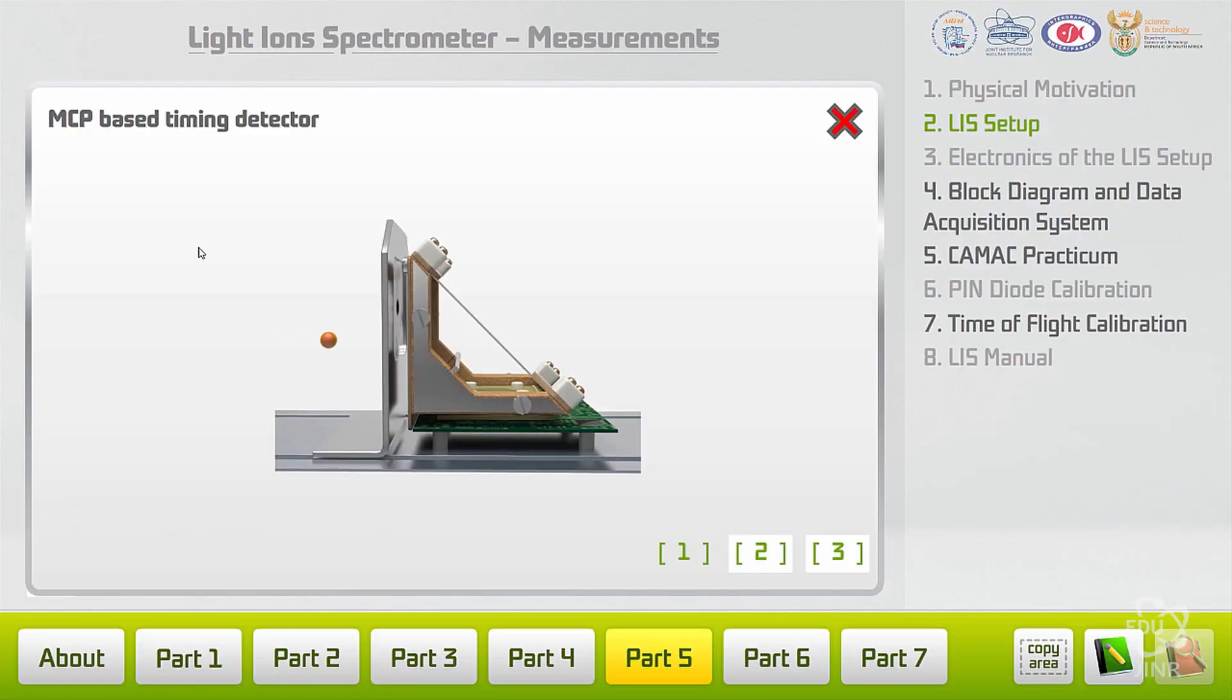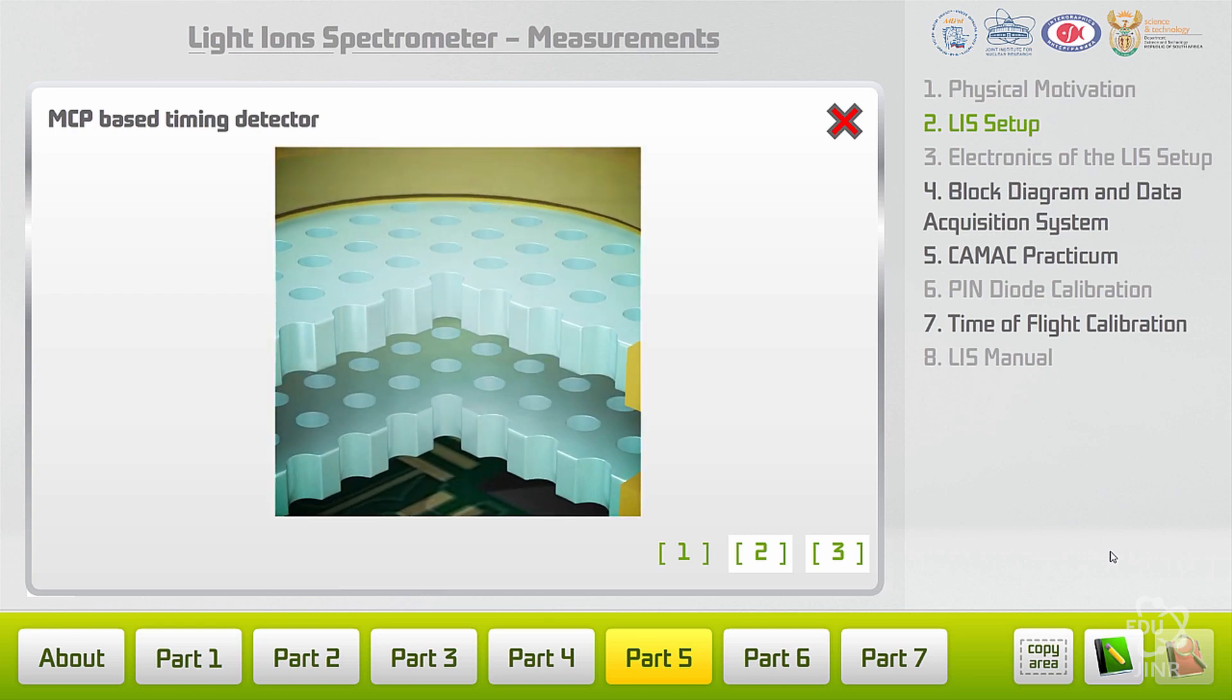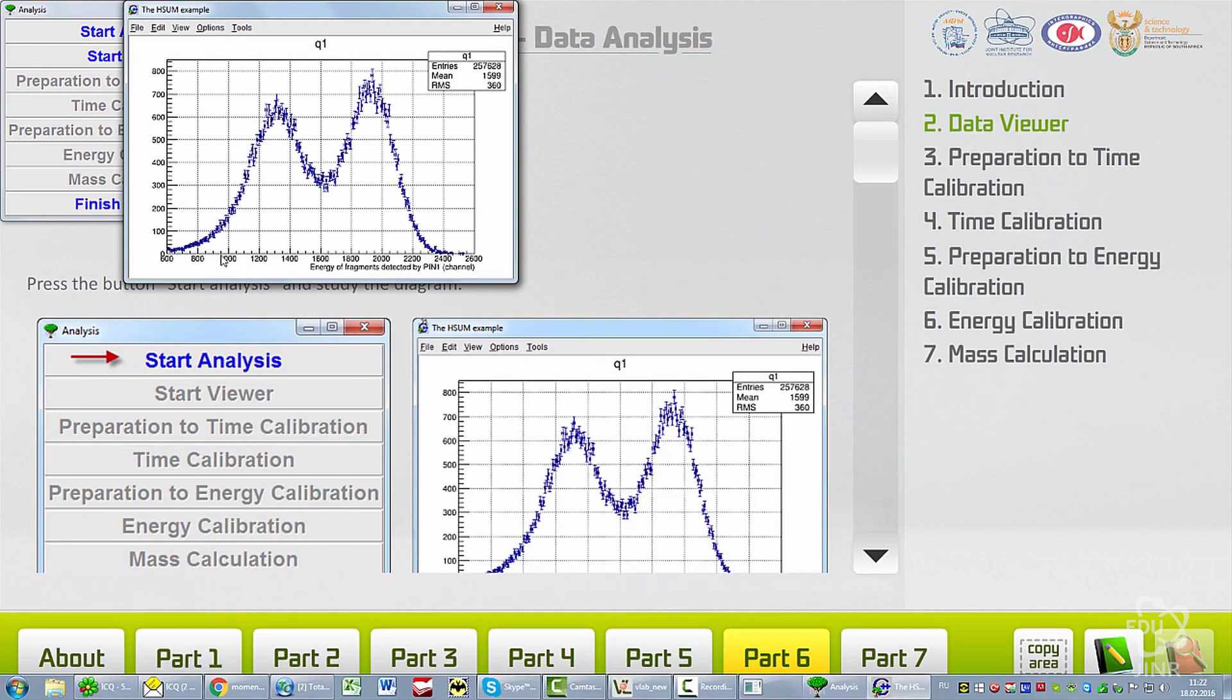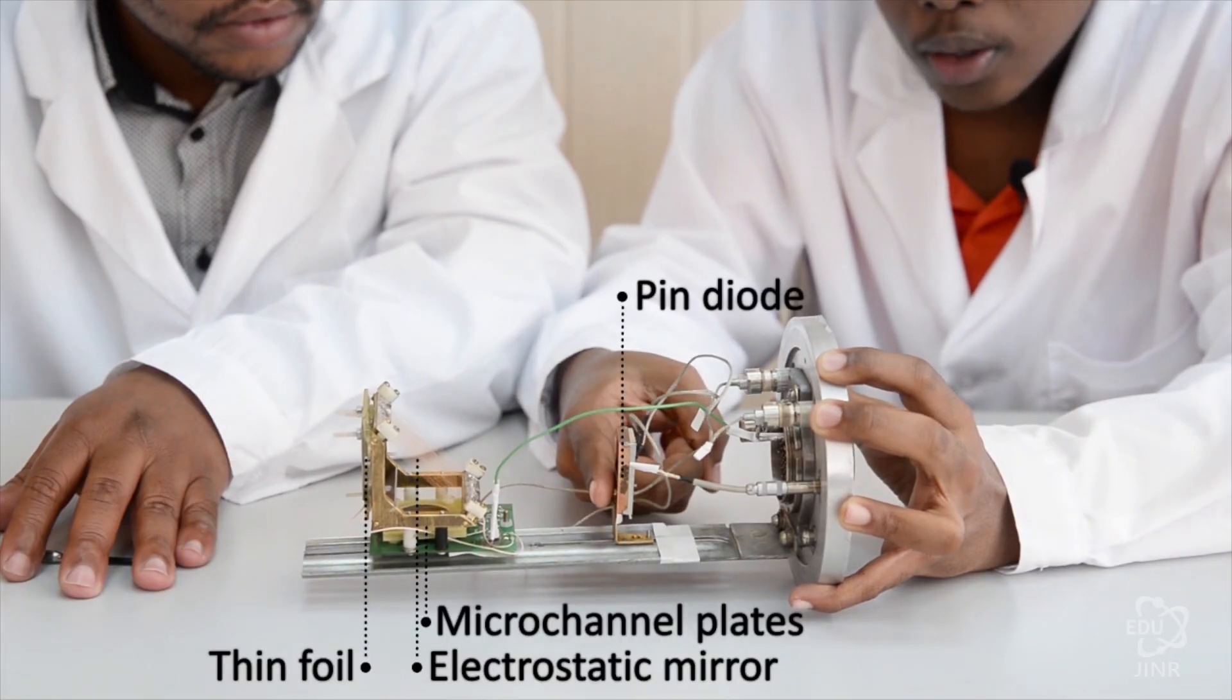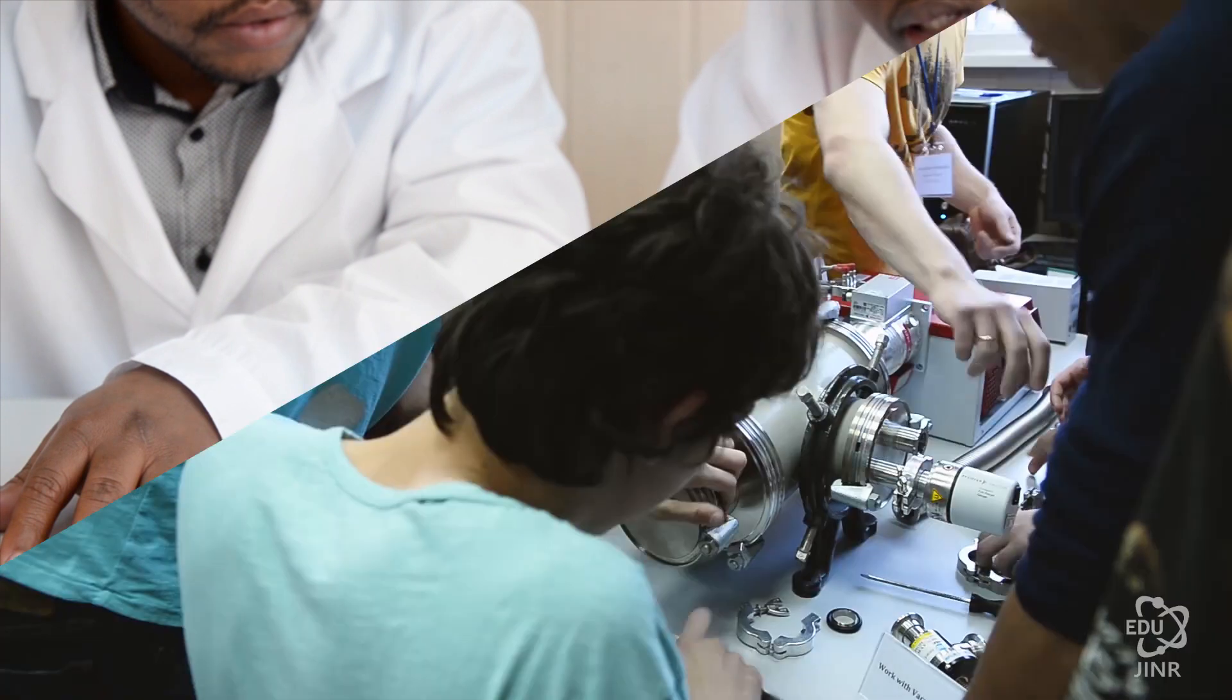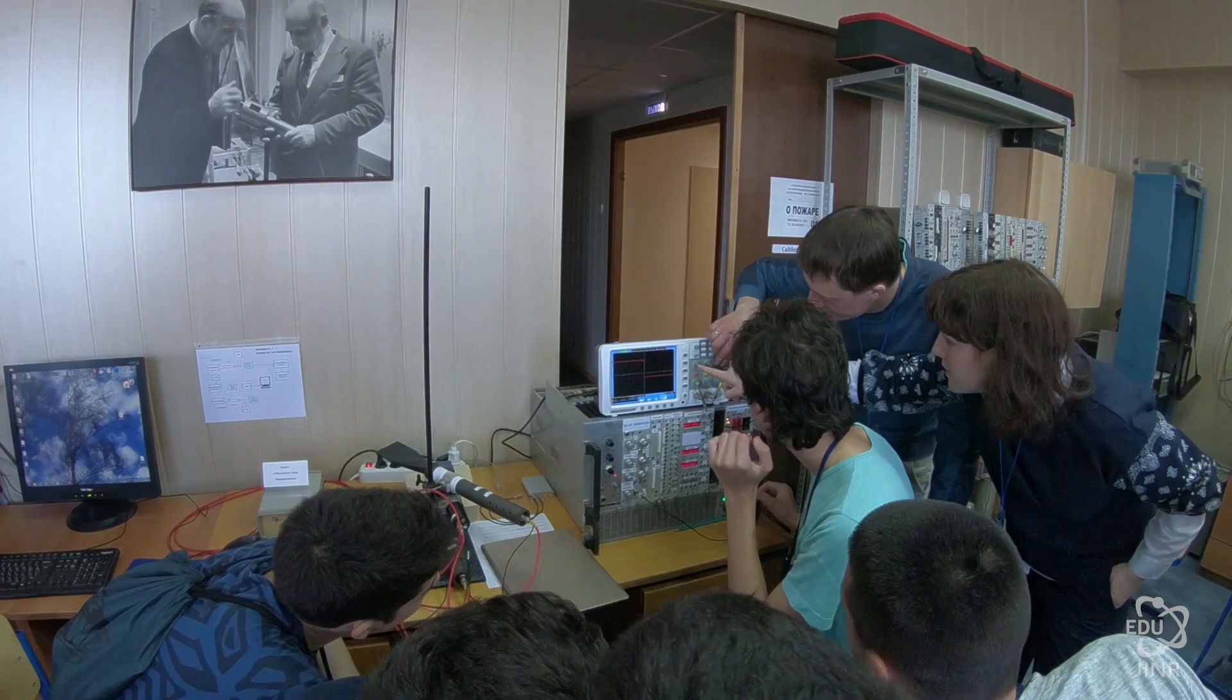The second direction is a cycle of virtual laboratories, in which we use real experimental data from the real setups. Not every university can afford a big physical setup, expensive equipment, or just work with a radiation source, for example, Californium. So in our virtual laboratories, students can work with these experiments and after that, even can access the real experiment we have at Joint Institute.